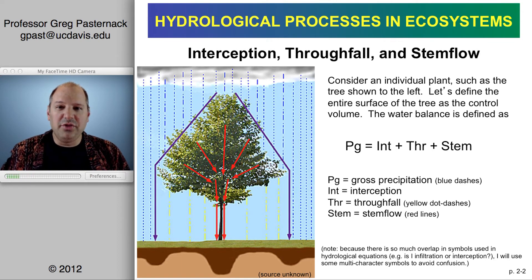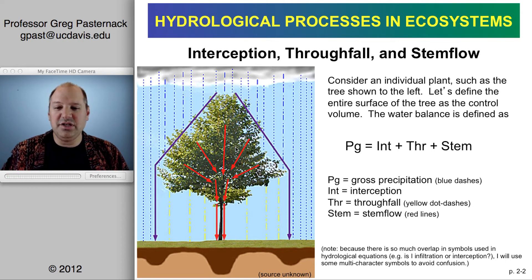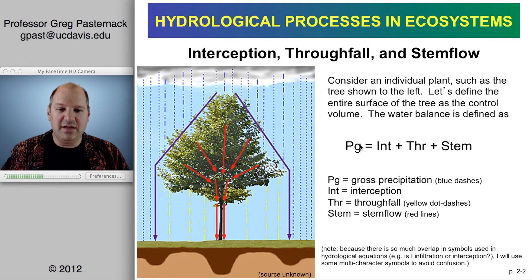Then we have the throughfall. Throughfall consists of two elements: free throughfall, which is water that falls through the canopy without ever touching any piece of vegetation and hits the ground directly; and water that is intercepted by the tree but then drops off out of the canopy. Separate from throughfall is stemflow — the water that accumulates from leaf to small branch to large branch down to the tree trunk and then runs down the trunk to the ground. So the basic water balance is: precipitation equals throughfall plus stemflow plus intercepted water.